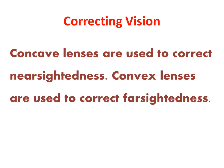Correcting vision: if the eyeball is slightly too long or too short, the image on the retina is out of focus. We can solve these issues by wearing glasses or contact lenses. Concave lenses are used to correct nearsightedness, and convex lenses are used to correct farsightedness.